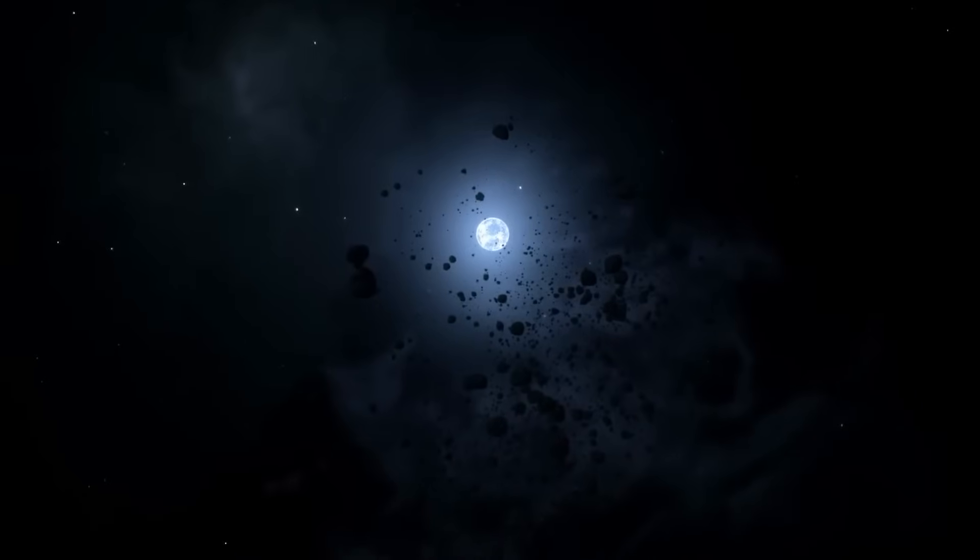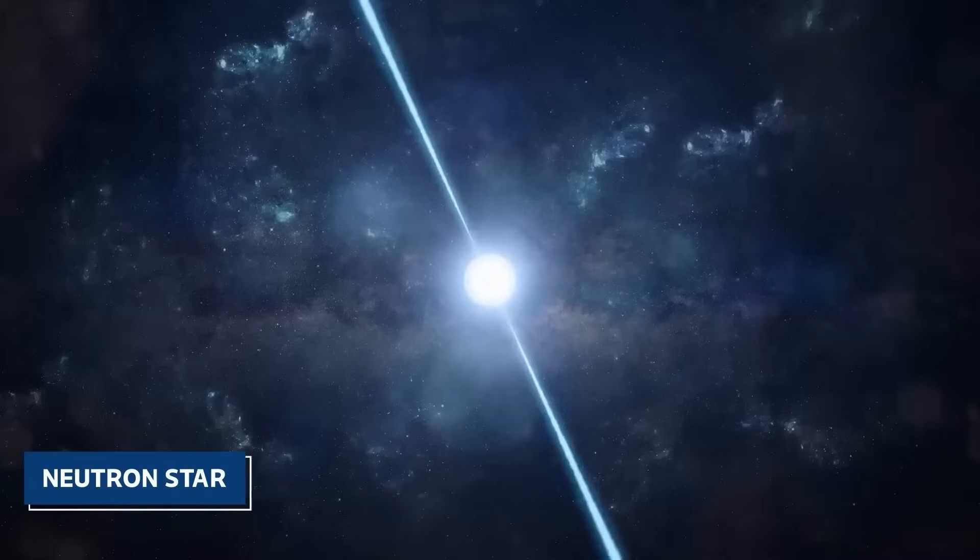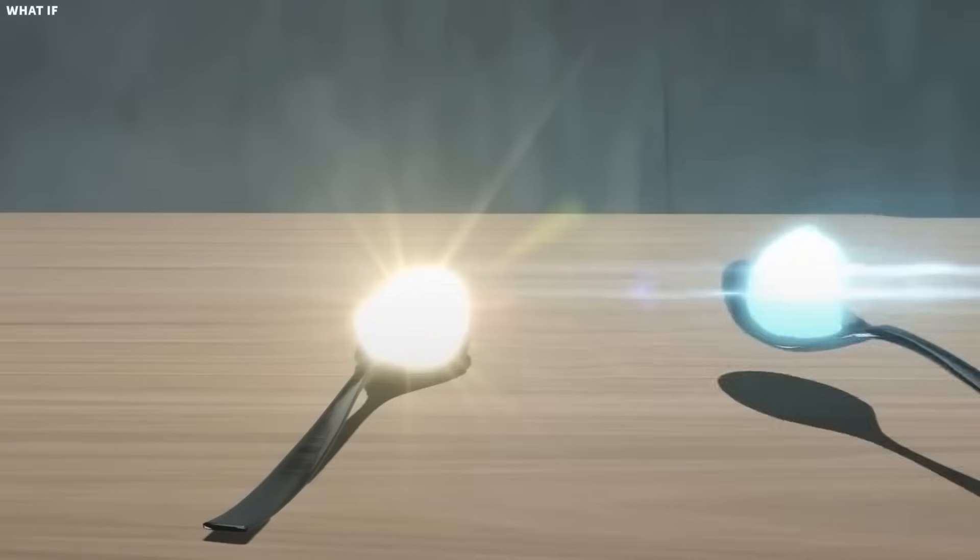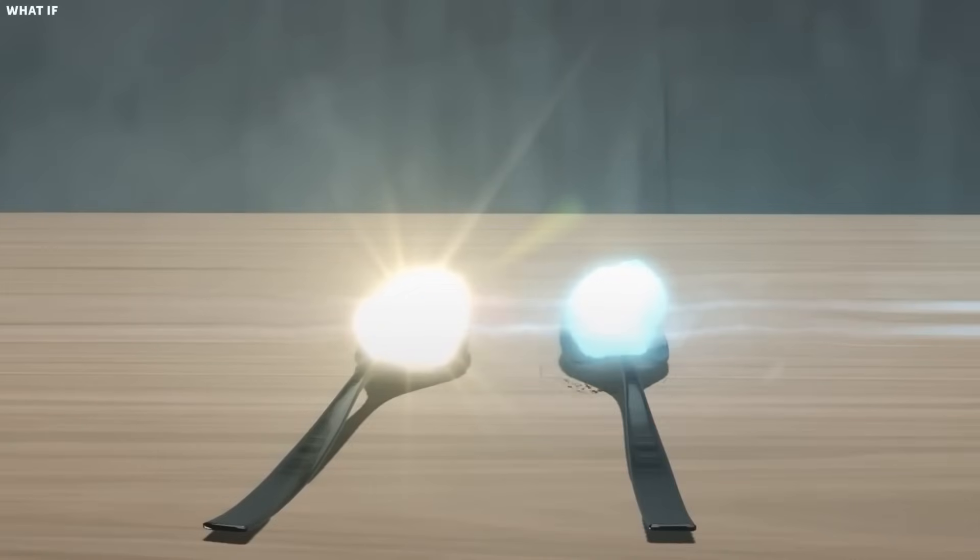Conversely, if the core isn't massive enough, it could become a neutron star, which is an incredibly dense body, primarily composed of neutrons. Neutron stars are so dense that a teaspoon of their material would weigh billions of tons on Earth.